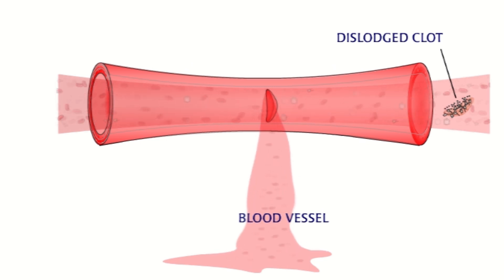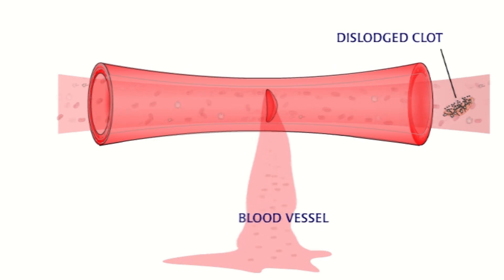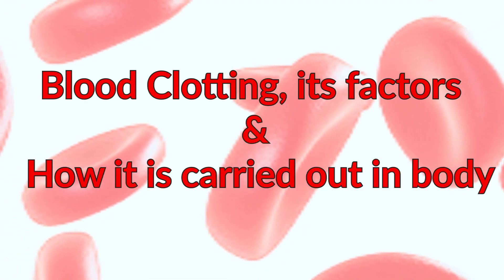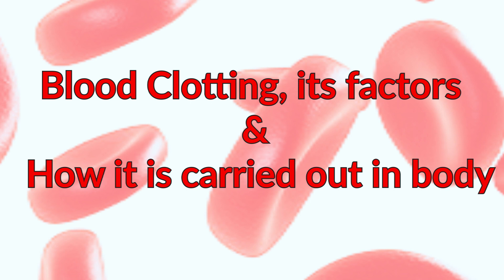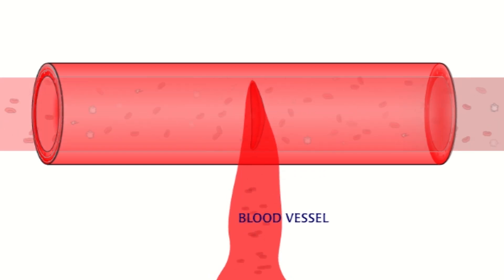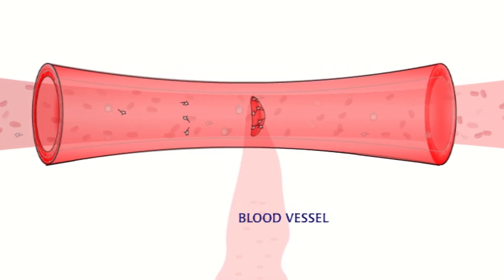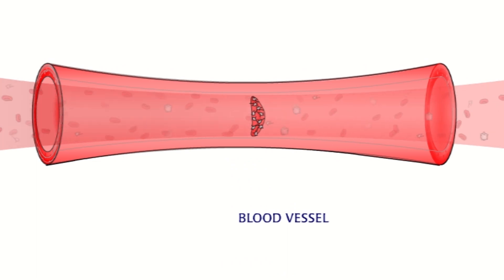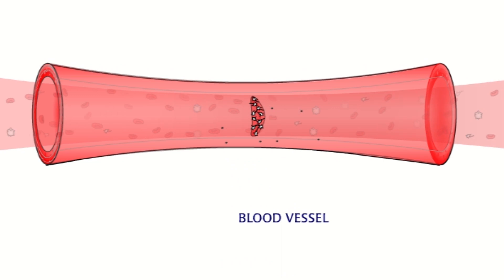To understand hemophilia, we first need to understand the details of clotting. The clotting process starts after the wall of the blood vessel is breached. The vessel constricts to reduce blood flow, and the platelets assemble at the damaged site. Though the platelets stop the bleeding at this stage, they are easily dislodged and the bleeding can resume.